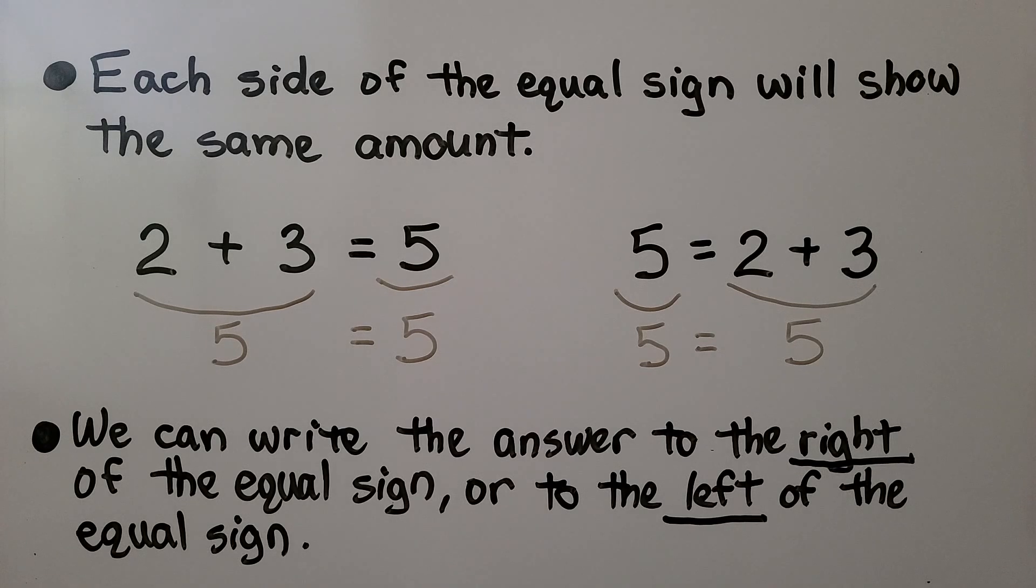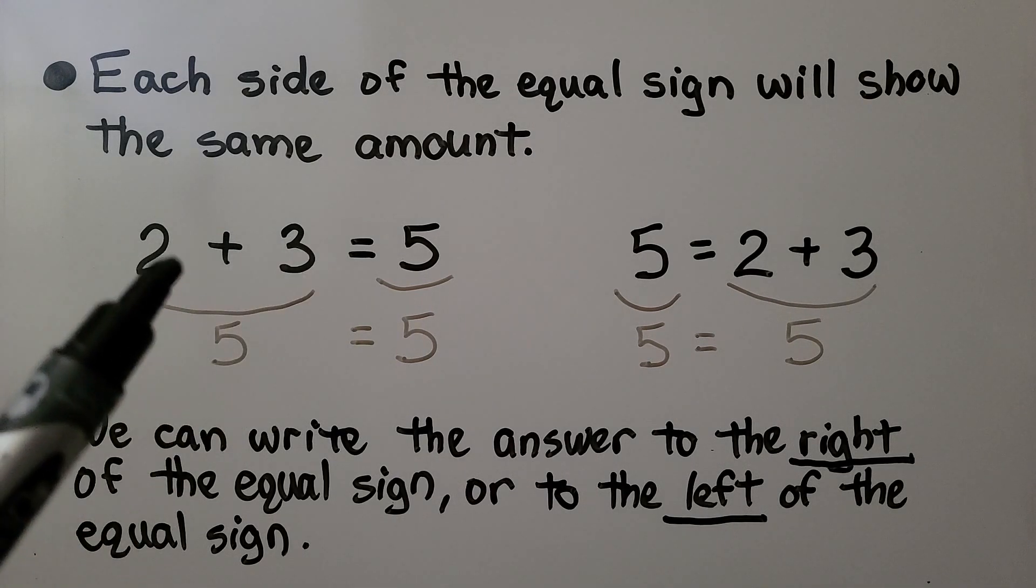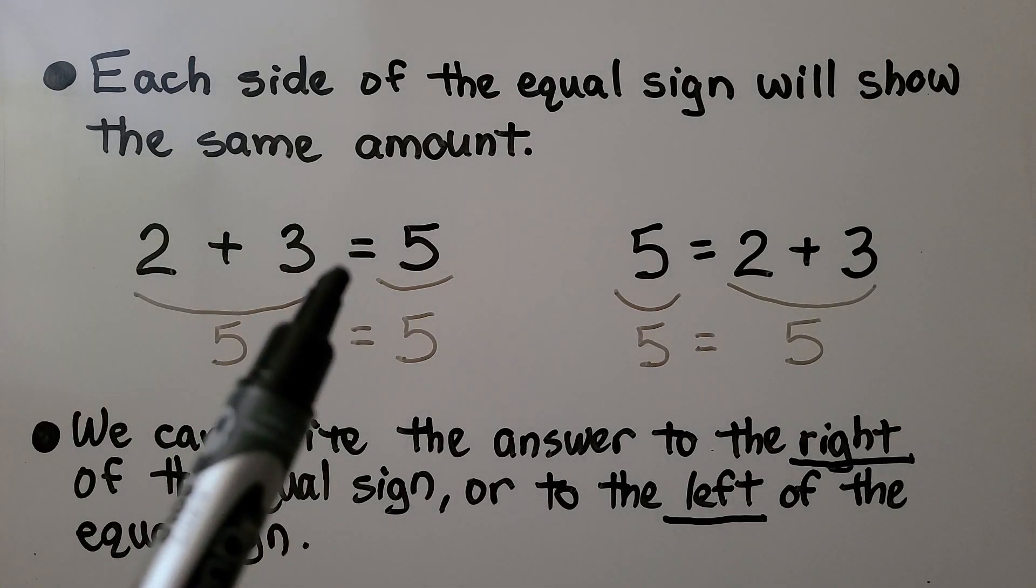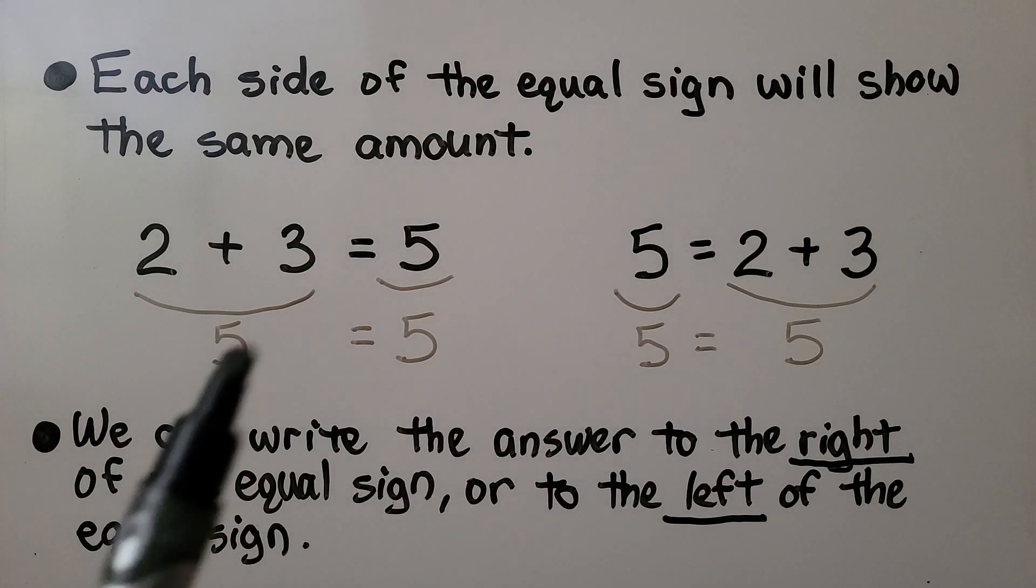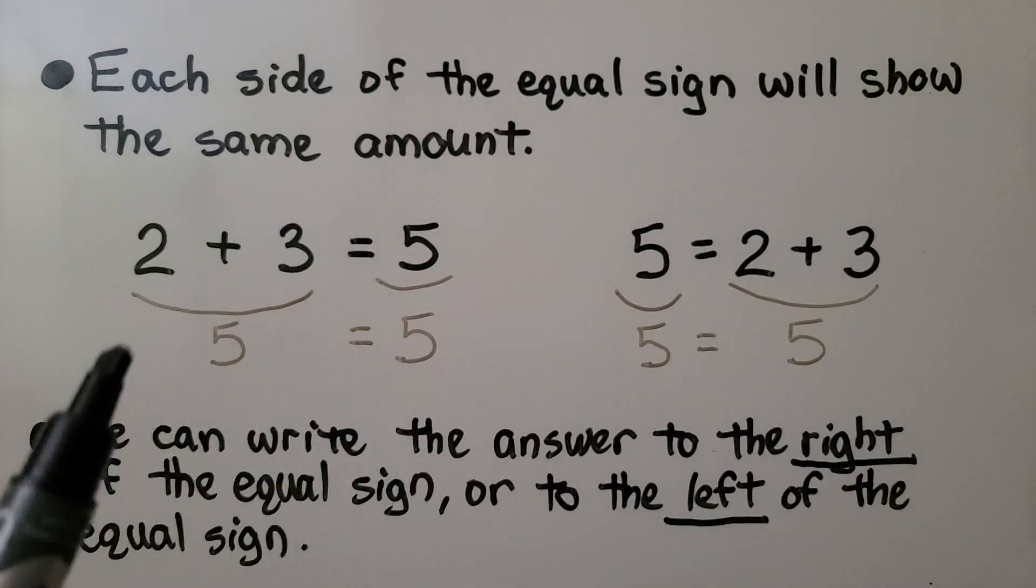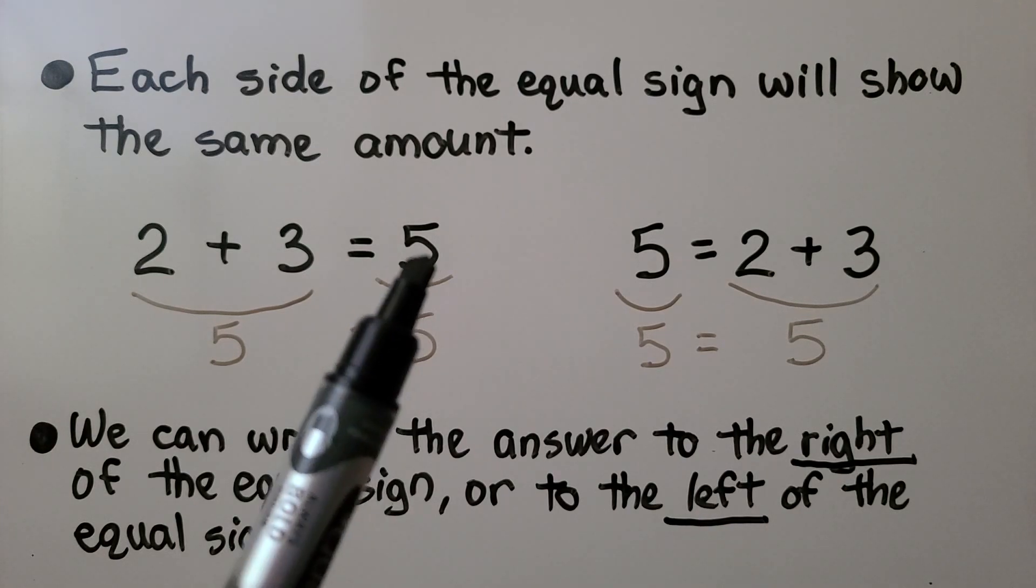Each side of the equal sign will show the same amount. We have 2 plus 3 on this side of the equal sign. That's a 5. And it equals 5. Each side of the equal sign shows the same amount. This one, it just shows it as 2 plus 3. And this side, it shows it as 5.